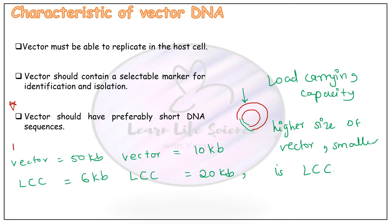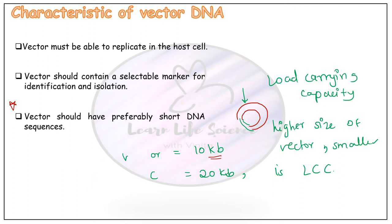By contrast, if the vector size is 50 kb, its load carrying capacity is much less — for example, only about 6 kb. A larger vector DNA sequence makes it comparatively weaker in carrying foreign DNA. If your target gene is small, a larger vector may still work, but for inserting large DNA fragments you need vectors with short DNA sequences. There is an inverse relationship between vector size and load carrying capacity.